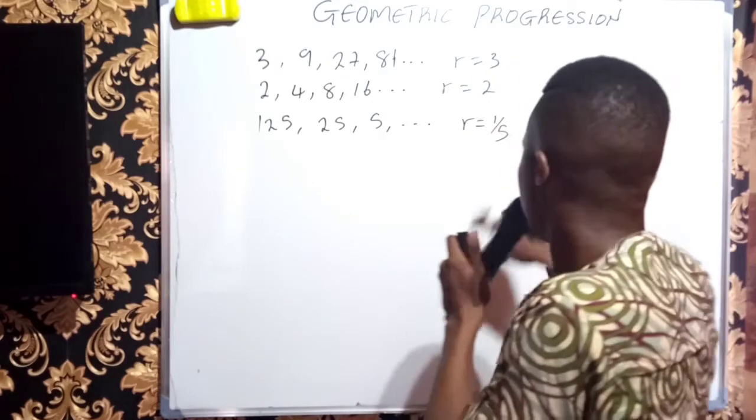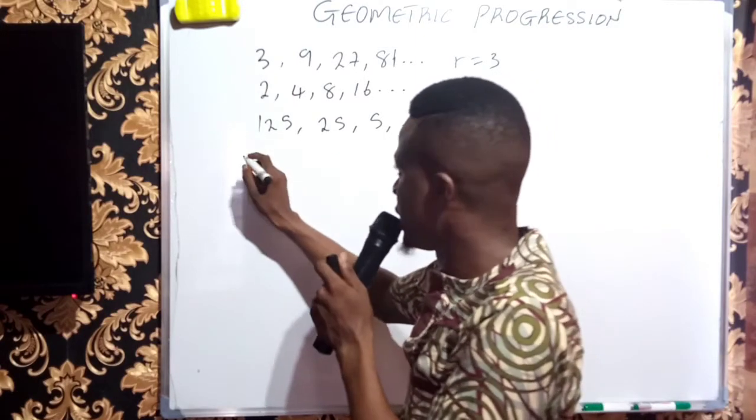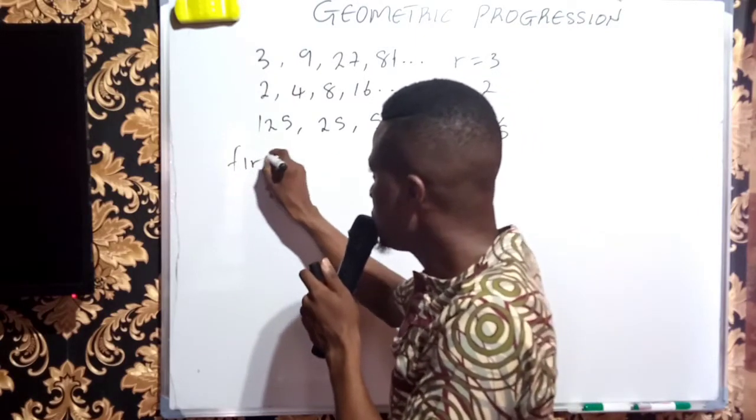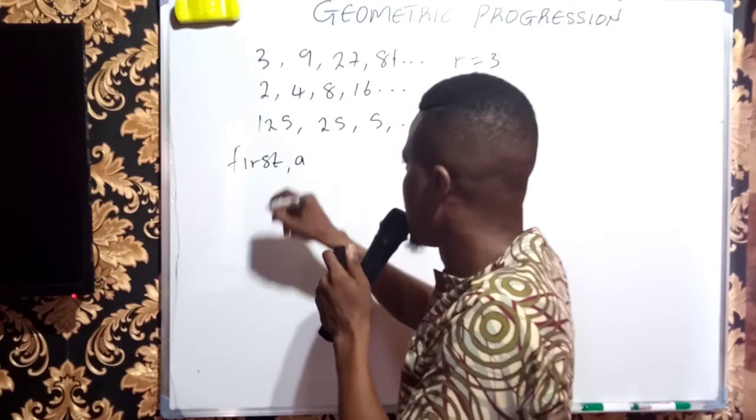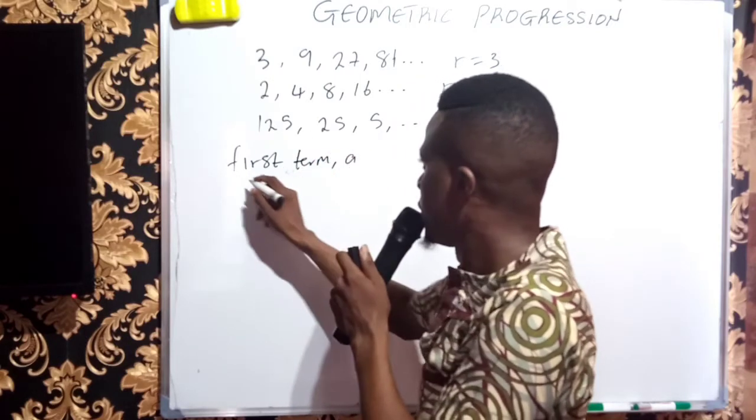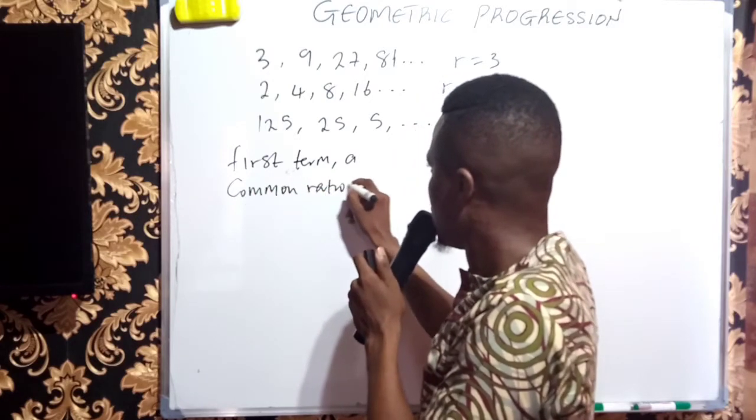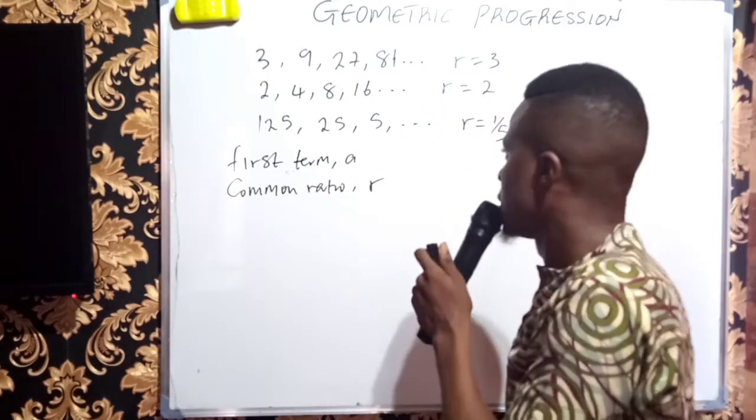And the symbol for common ratio is R. The first member of the sequence is known as first term. The first term, A. The first term which is A. Common ratio, which is R.